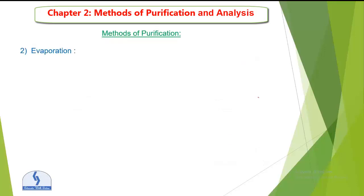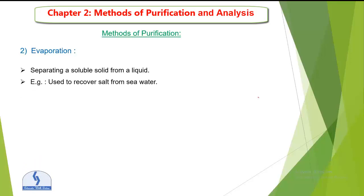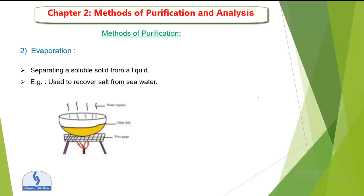Next is evaporation. Evaporation is the method of separating a soluble solid from a liquid. It is used to recover salt from sea water. Here is the figure — you can see a china dish containing a liquid with dissolved solid. We heat it, the water vapor comes out, and we can recover the salt. This is the example of evaporation.